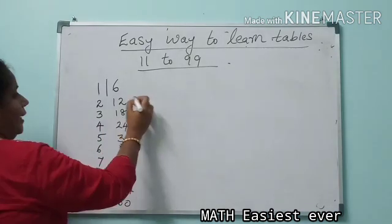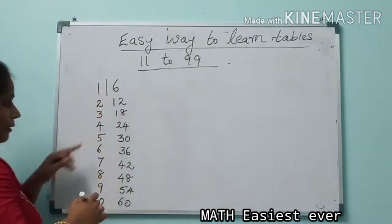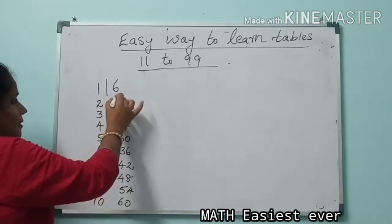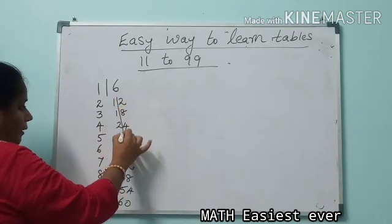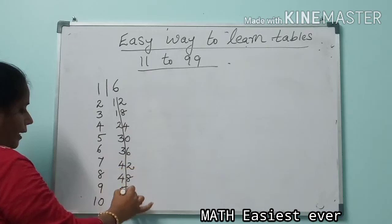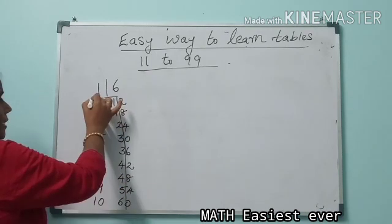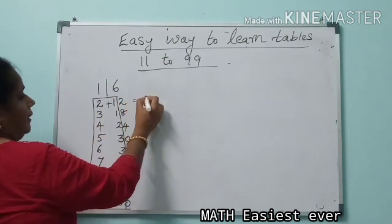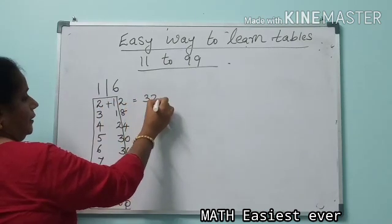What you have to do is take the tens digit number alone from here and add it to these numbers. Now, what is 2 plus 1? 3, so write 3, making 32.